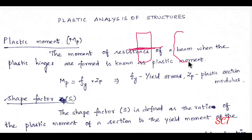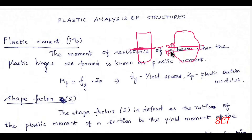For an unsymmetrical axis, the neutral axis and the equal area axis are different. The neutral axis is the elastic moment axis. The equal area axis (EAA) is the plastic moment axis.